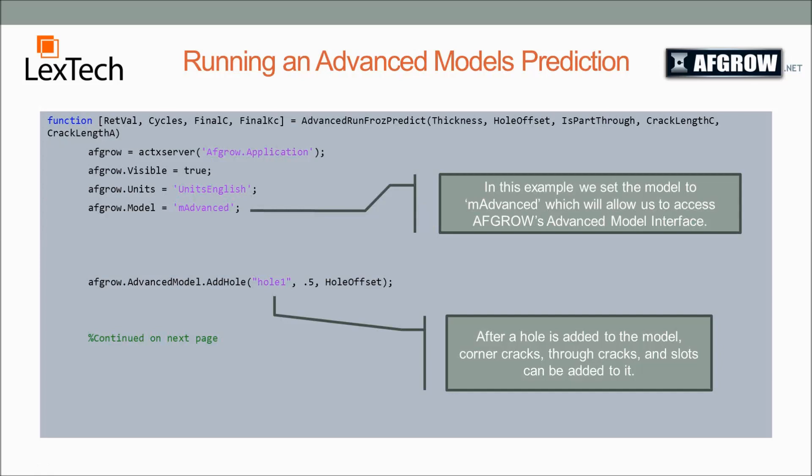In this, we need to set the model equal to advanced in order to access the AFGRO advanced model solutions. Then the first thing we're going to be doing is adding a hole to the model. This is very similar to how you would do it in the user interface. We're just doing it programmatically. So we add a hole to the model and we call it hole1, and we give it a diameter of 0.5 and a hole offset, which is passed through the function.